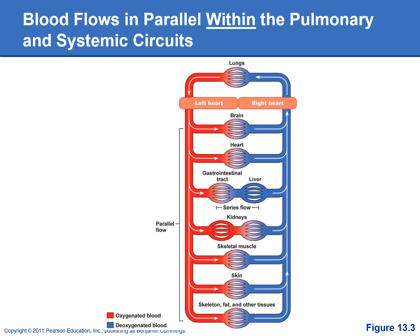Parallel flow also allows us to regulate blood flow to different organs depending on their activity level. If you start exercising, you can increase blood flow to skeletal muscle and decrease it to the GI tract, because you're probably not eating while you're exercising.